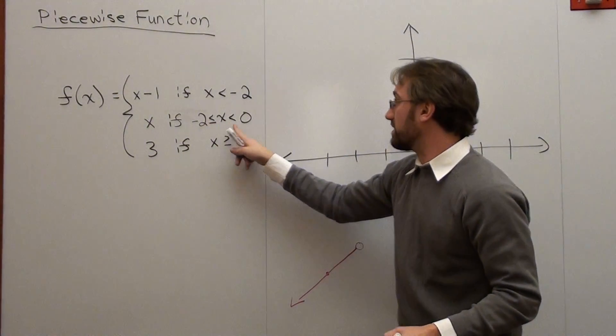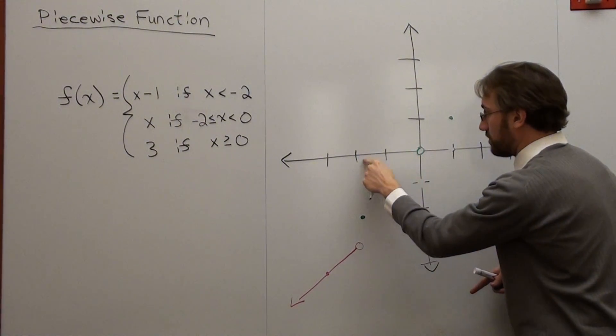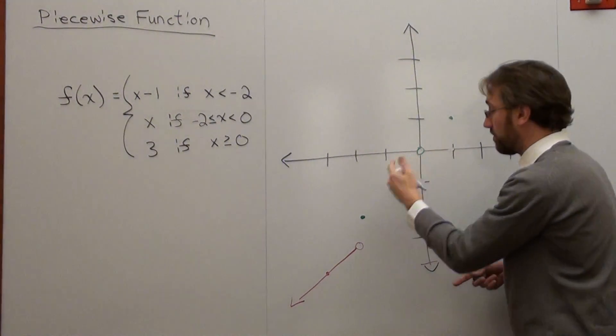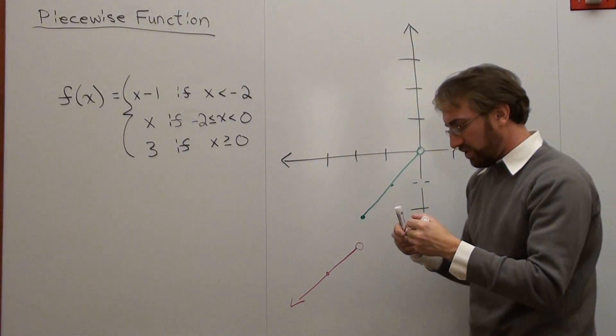From negative 2, it's a closed circle all the way to 0, which is an open circle. So this is negative 2 for my x value, this is 0 for my x value, so it goes like that.